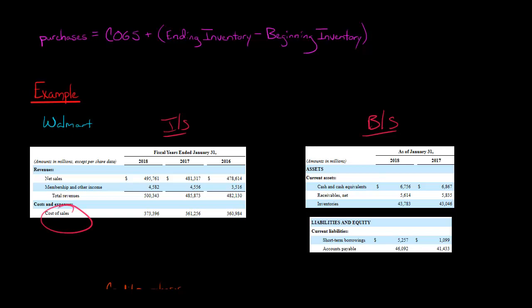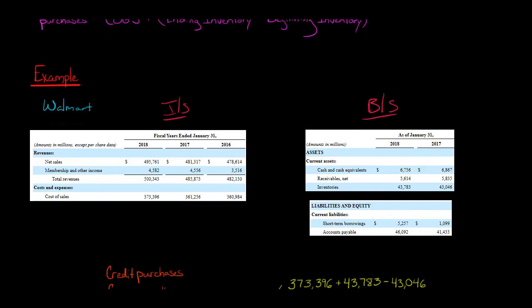So we're going to need the following information. We're going to need cost of goods sold for 2018. So we're going to have that as of the year ended January 31st, 2018. We've got cost of goods sold of $373 billion.